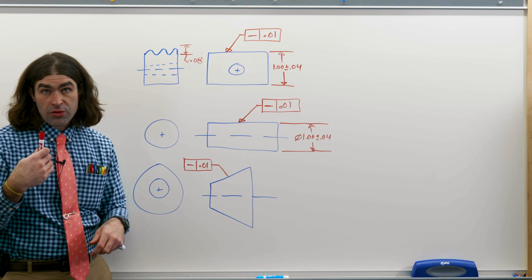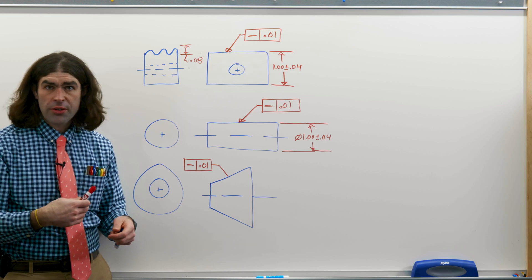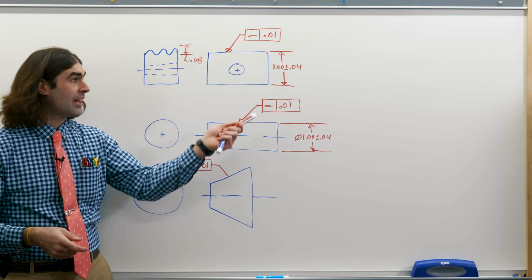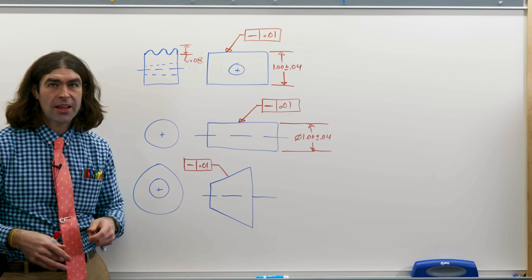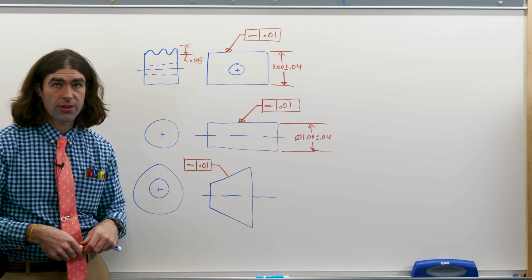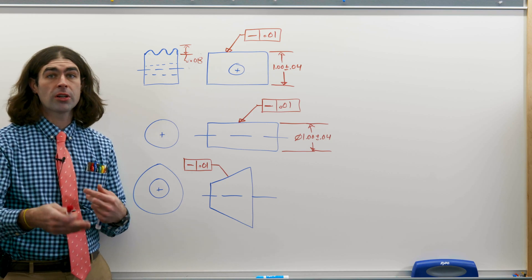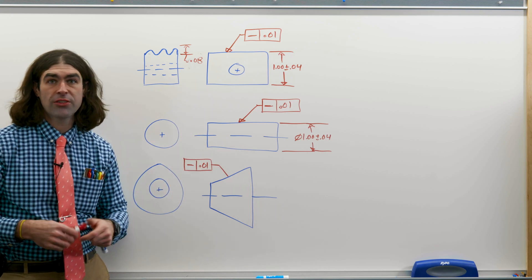So straightness controls the straightness in one direction only, and it's usually indicated on a drawing like so. On a 3D model, it's got to be shown with the arrow or something - it's got to be more clear. In an orthographic projection, it's pretty straightforward.